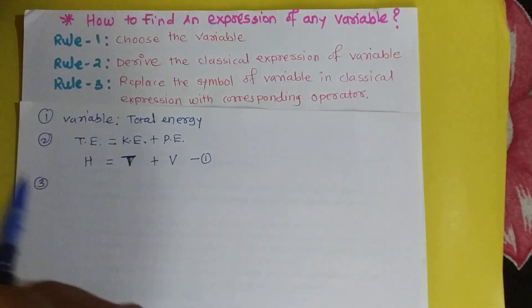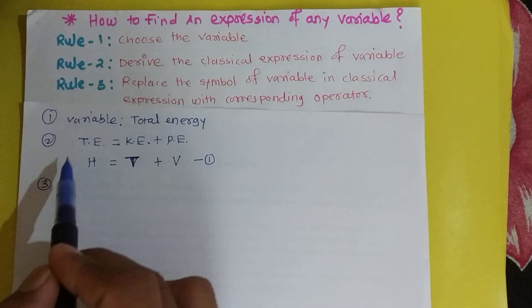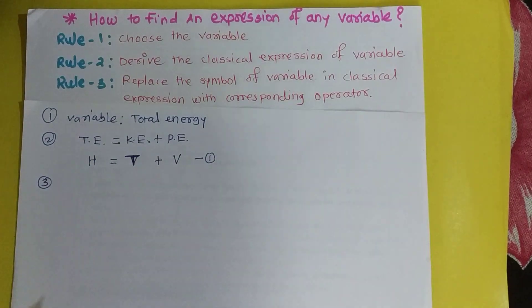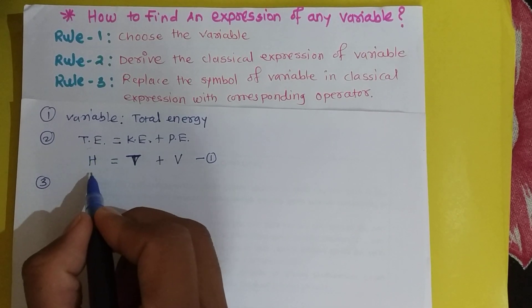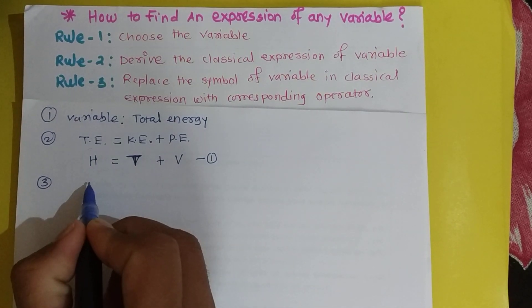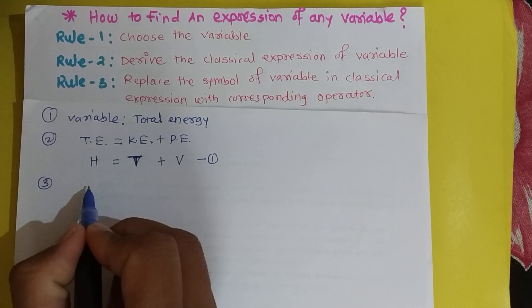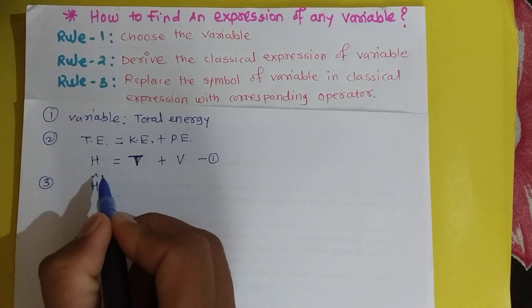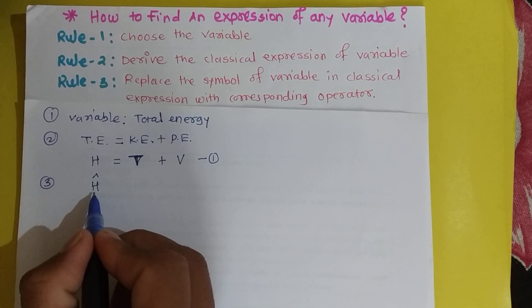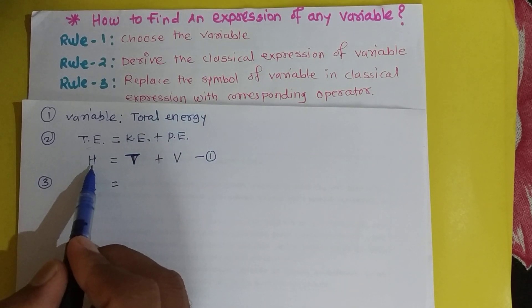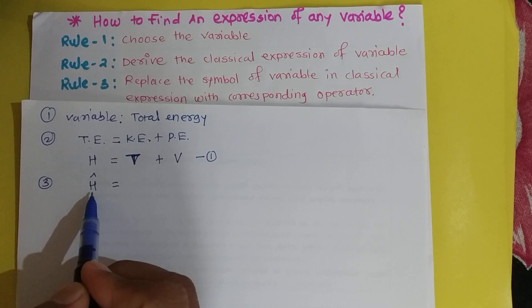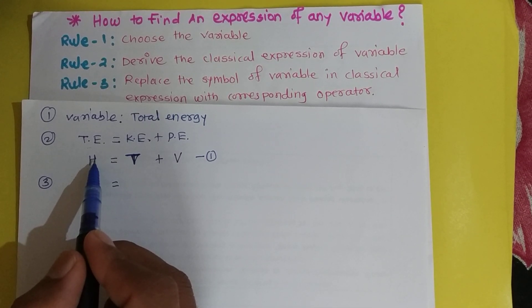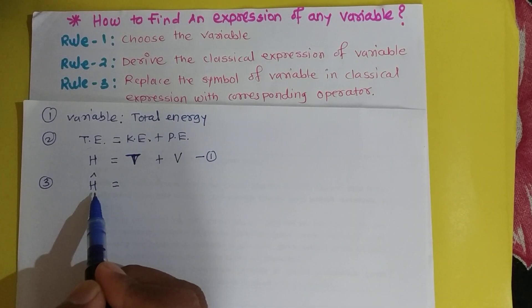Now we apply rule three: replace the symbols of variables in the classical expression with their corresponding operators. According to rule three, find the symbols in the expression. Total energy is represented by H, which is a variable. To replace it with its corresponding operator, you simply put a cap overhead on it. So H becomes Ĥ — H is the total energy in classical mechanics, and Ĥ is the total energy operator in quantum mechanics.